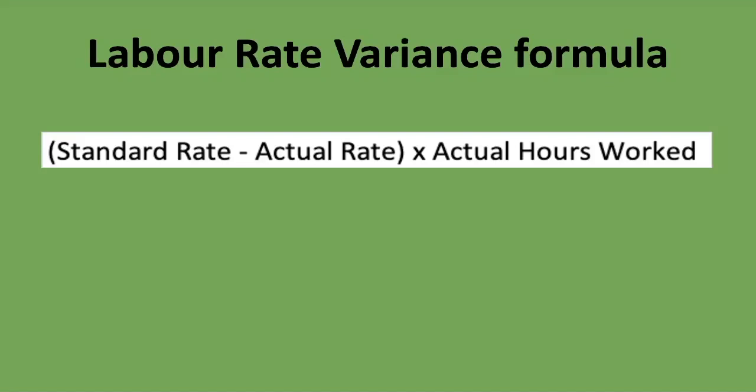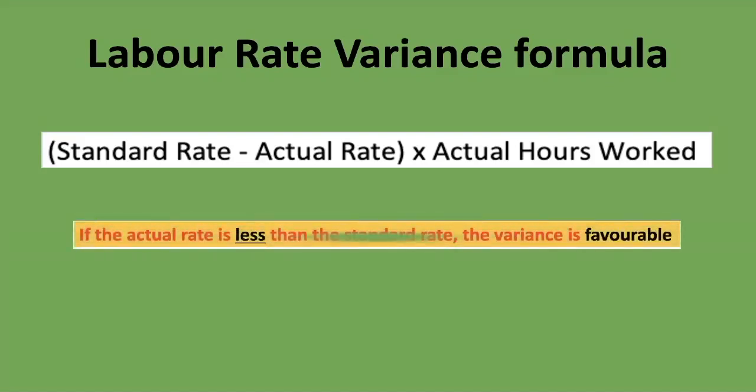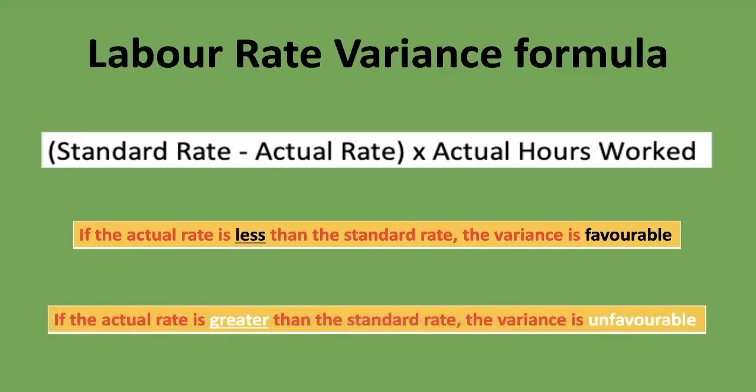If the formula gives a negative answer, the variance is unfavorable; a positive answer means it's favorable. If the actual rate is less than the standard rate, the variance is favorable — you paid less than planned. If the actual rate is greater than the standard rate, the variance is unfavorable — you paid more than anticipated.